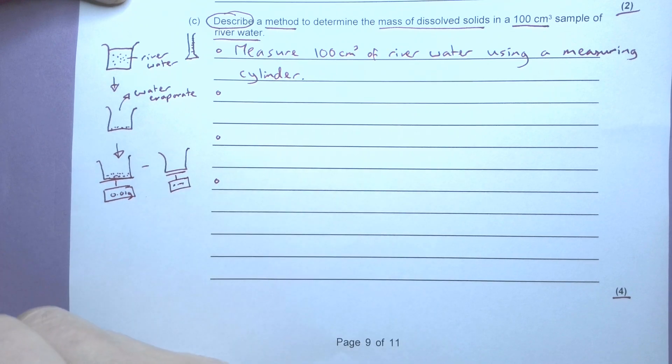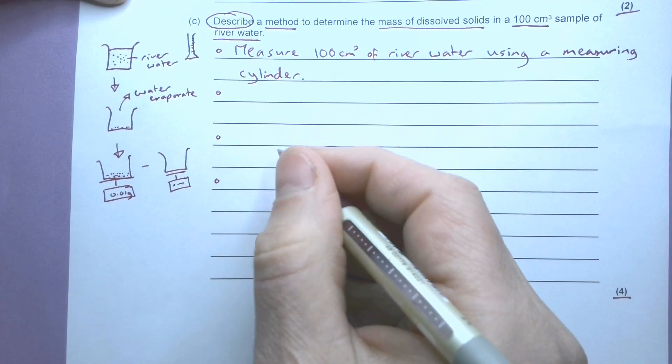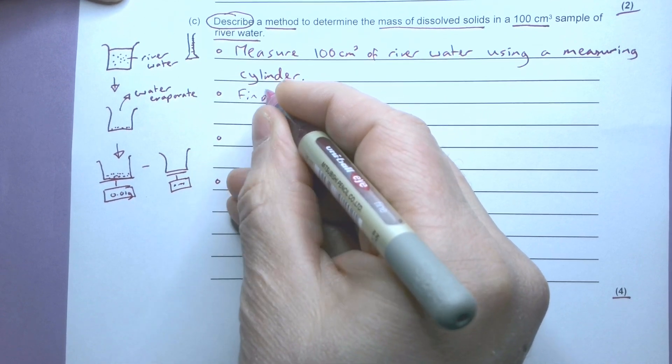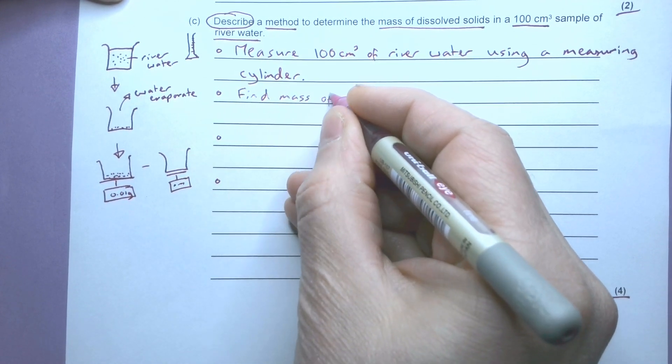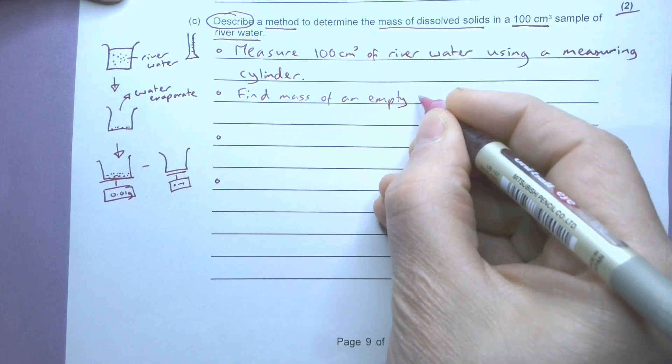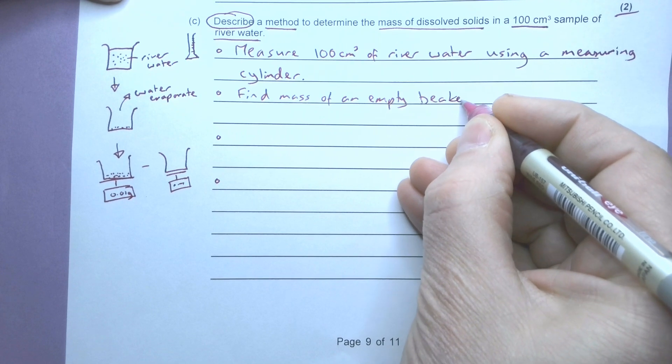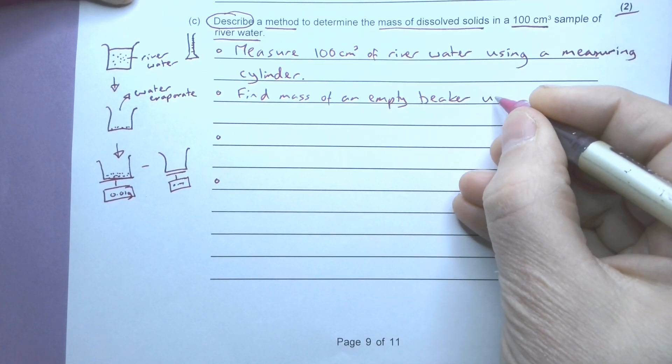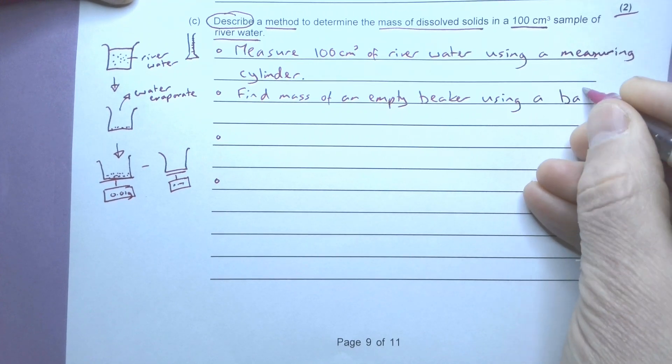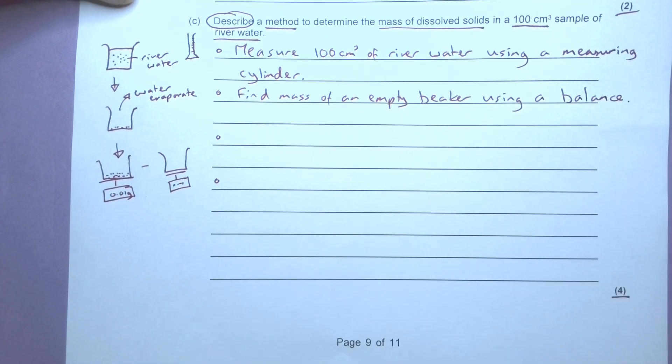Whatever that's going to be. Okay, so I'm going to find the mass of the empty beaker first. So: find the mass of an empty beaker using a balance.